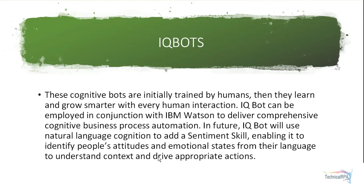Machine learning and artificial intelligence in RPA — the next step is cognitive computing. These cognitive bots are initially trained by humans, then they learn and grow smarter with every human interaction. Initially you perform some training, specifying the type of font and output you need. After that training is complete, the bot learns and will produce the proper output.